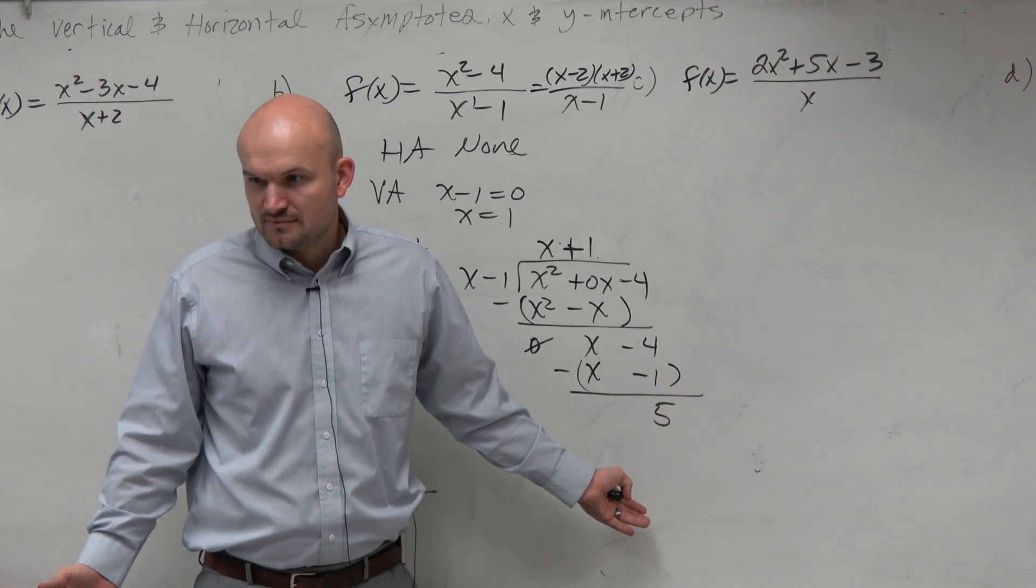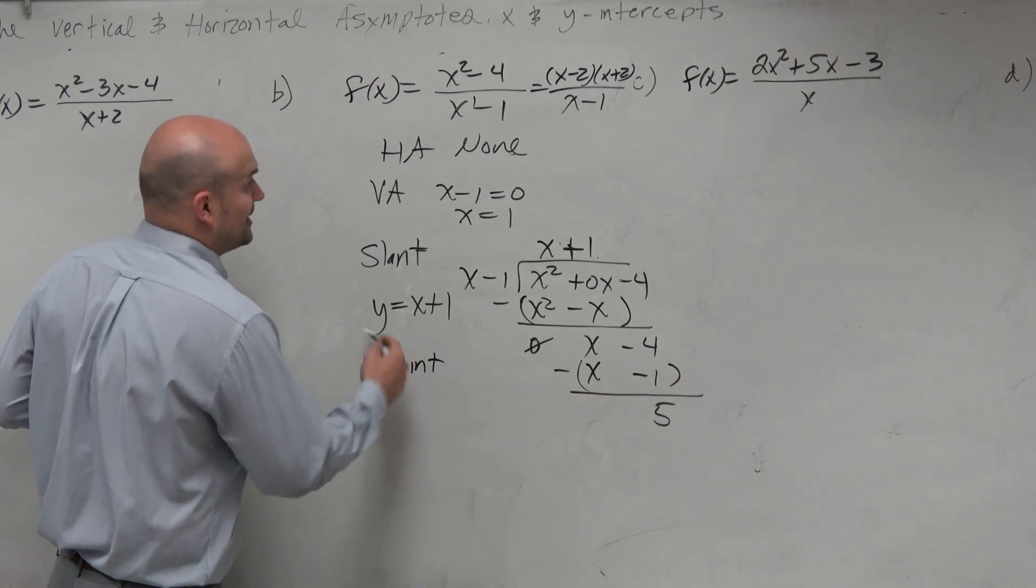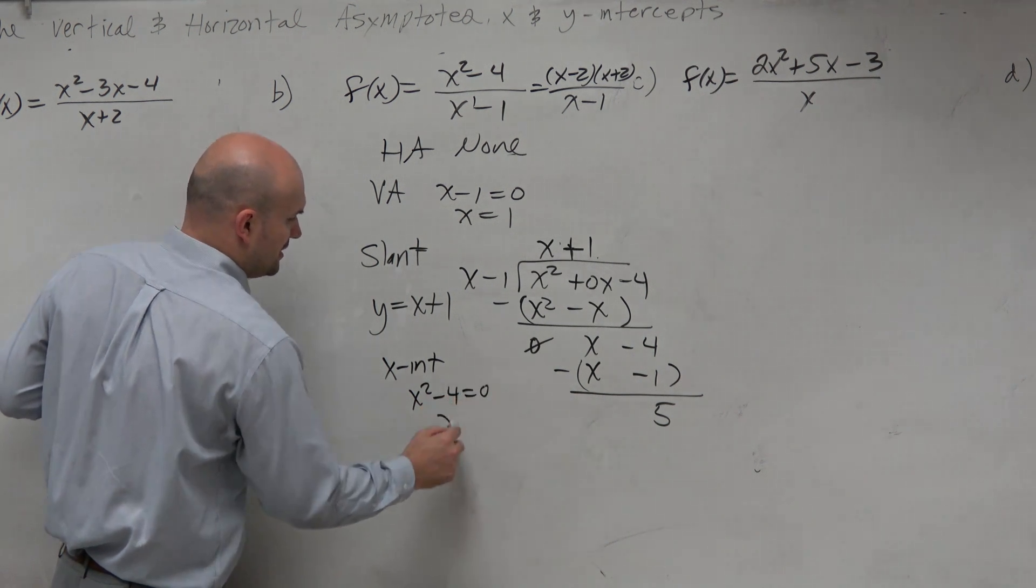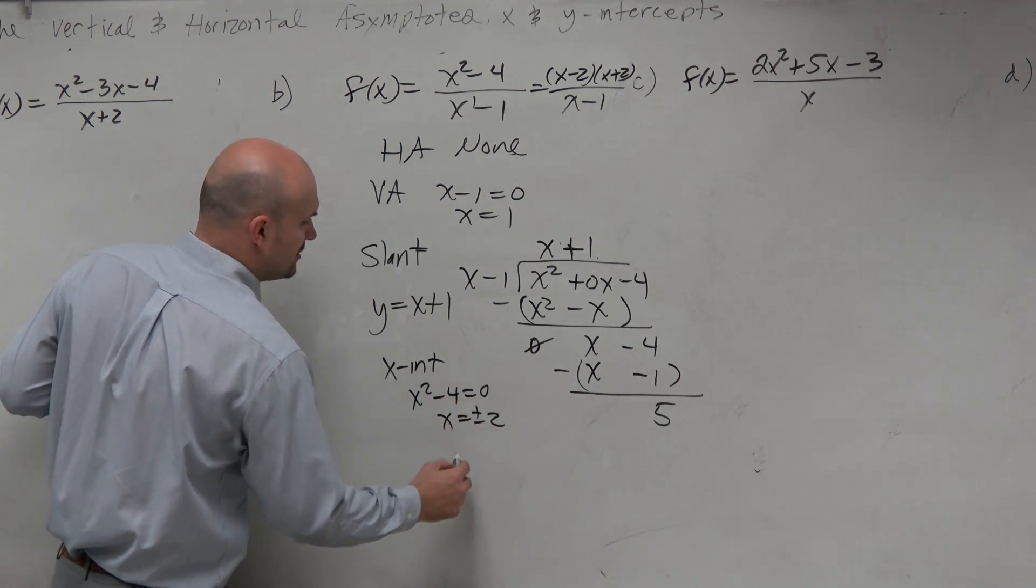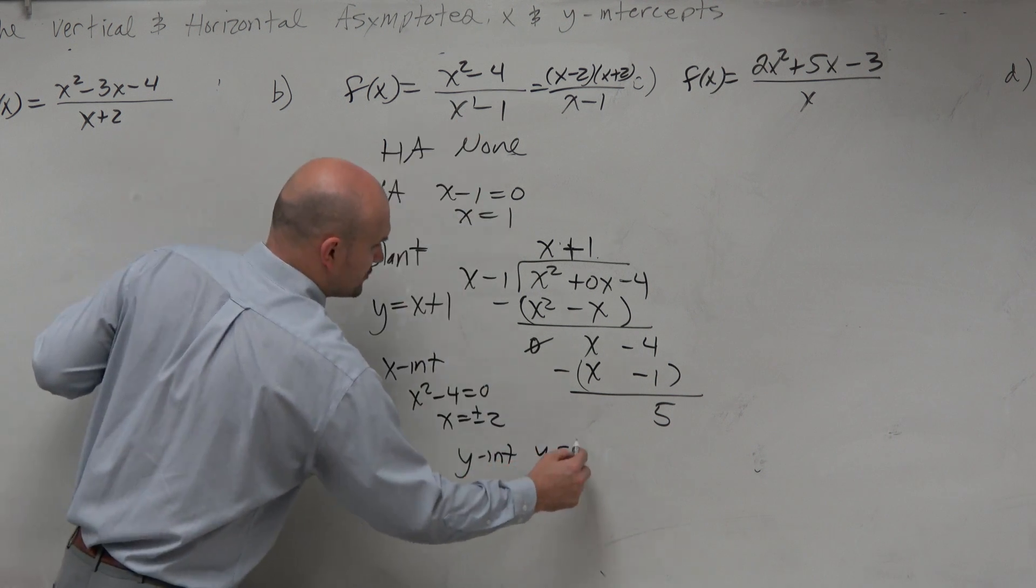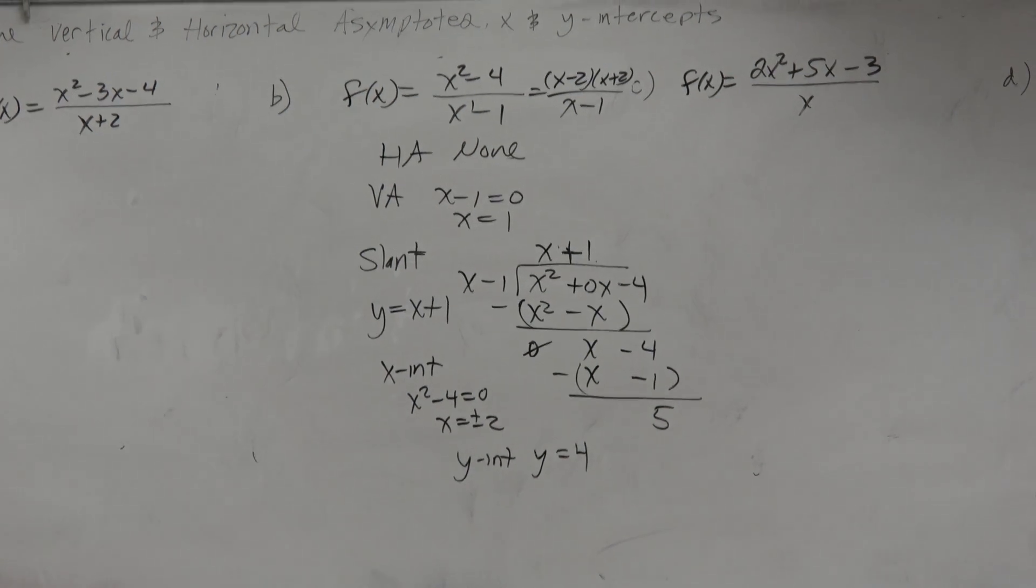So then let's get to our x-intercept real quick. Set the numerator equal to 0. x equals plus or minus 2. y-intercept: constant over constant, y is equal to 4. Now I'll go ahead and check my answer so you guys can verify what this looks like.